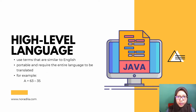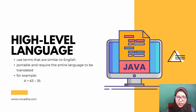High-level languages are easier to read, write, and maintain than low-level languages. This is because high-level languages use terms that are similar to English. High-level languages are also portable and require the entire language to be translated. It is similar to human language. For example, A = 63 - 35.